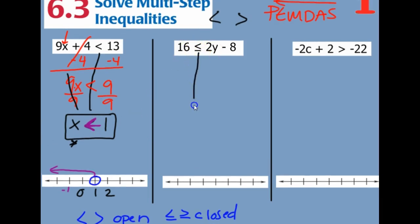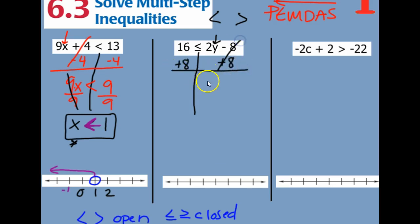Next, draw your line down when you get y by itself. So get rid of your addition and subtraction first. The opposite of subtracting would be adding 8 on both sides. Those eliminate and we have 2y. And then 16 plus 8 more: 6 plus 8 is 14, and then 1 plus 1 is 2, so we have 24.